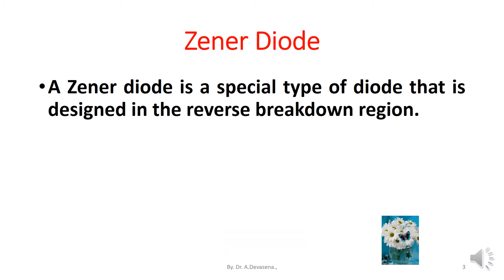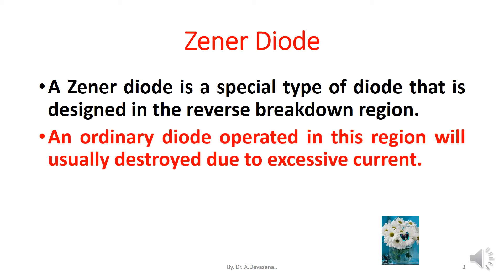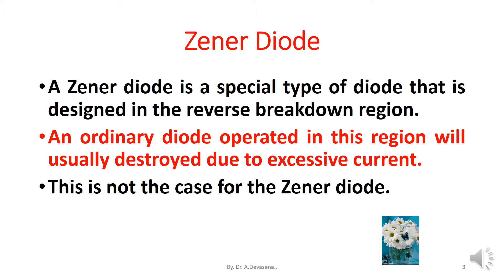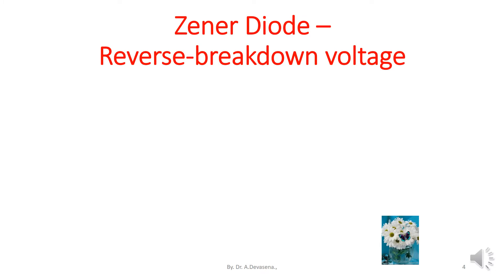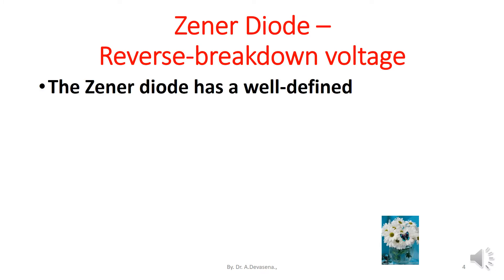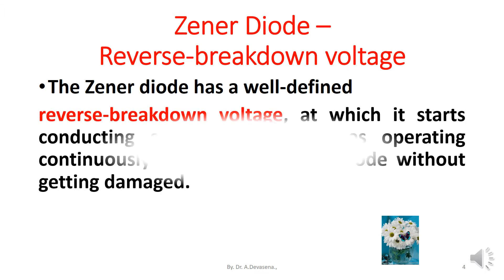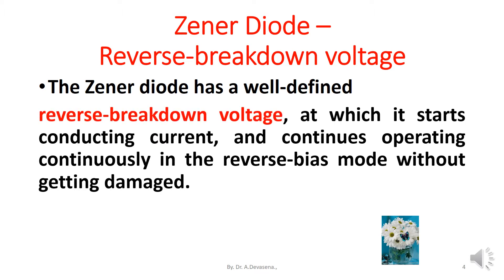Zener diode is a special type of diode that is designed in the reverse breakdown region. An ordinary diode operated in this region will usually be destroyed due to excessive current. This is not the case for the Zener diode. The Zener diode has a well-defined reverse breakdown voltage at which it starts conducting current and continues operating in the reverse bias mode without getting damaged.